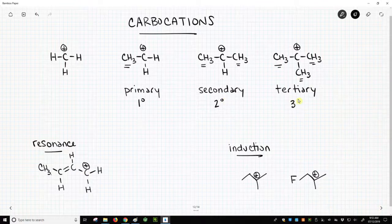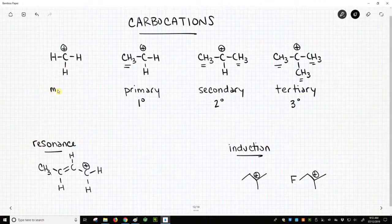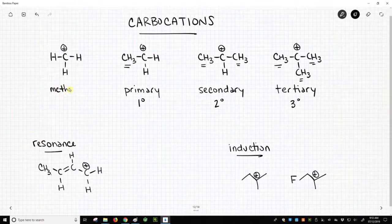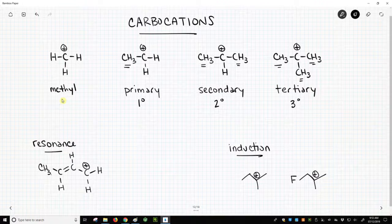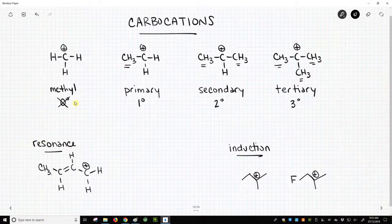Three carbon groups – surprise – we call it tertiary. What do you think we call the first one? The first one we call – and this is so unsatisfactory to me – methyl. This is a methyl carbocation, and I want to always say, maybe it's zero degree. No, it's not zero degree. No one will say zero degree. It's methyl and then primary, secondary, and tertiary.